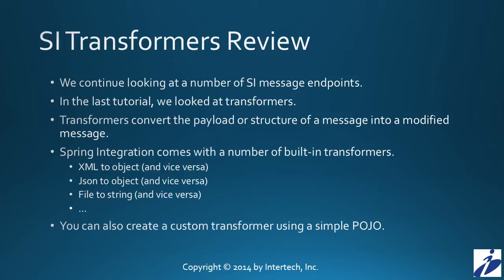Transformers take a message from a message channel and convert it to another message, either a message with a different payload or message structure. For example, in Spring Integration we have a number of built-in transformers that take XML messages and change them into Java object messages and vice versa, or take a JSON message and transform that to an object message or vice versa. Lots of different built-in Spring Integration transformers come out of the box, but you can also create your own custom transformer using a simple plain old Java object.